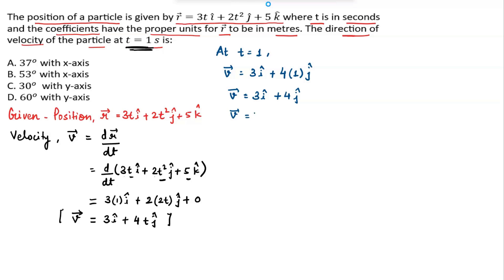Now this velocity is in the form of v vector equals v_x i cap—here this i cap represents the velocity in x direction—plus v_y j cap. J cap represents the velocity in y direction. So if we compare these two, we can write v_x is 3 and v_y is 4.